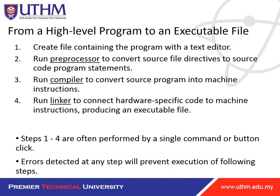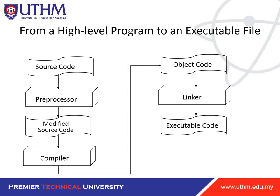From a high-level program to an executable file: first, create a file containing the program with a text editor. Then run the preprocessor to convert source file directives to source code statements. Then run the compiler to convert the source program to machine instructions. Then run the linker to connect hardware-specific code to machine instructions, producing an executable file. Steps 1 to 4 are often performed by a single command or button click. Errors detected at any step will prevent execution of the following steps — if you have an error, you need to fix it, otherwise your program cannot run.